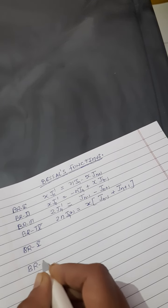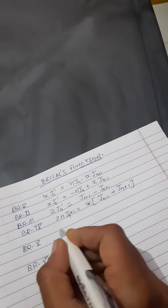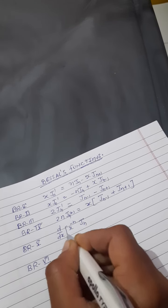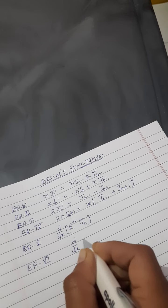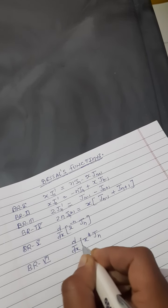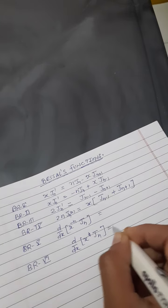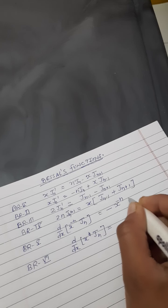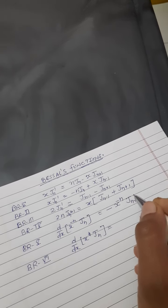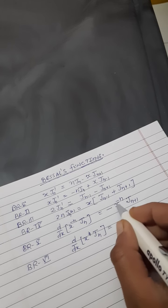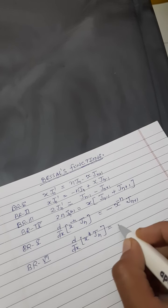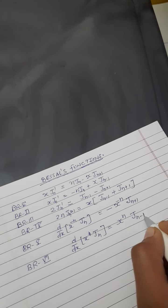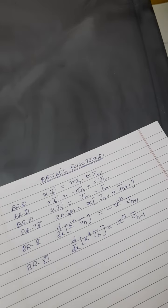Next, fifth and sixth Bessel recurrence relations: d/dx[x^(-n)·Jn] and d/dx[x^n·Jn plus 1]. x raise to the power n positive है तो यहाँ पर negative value आएगी।